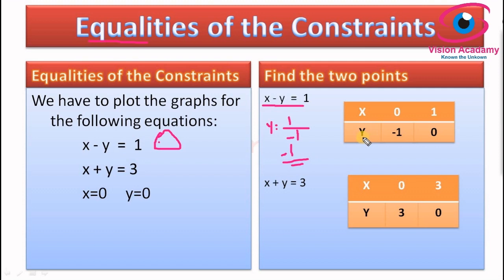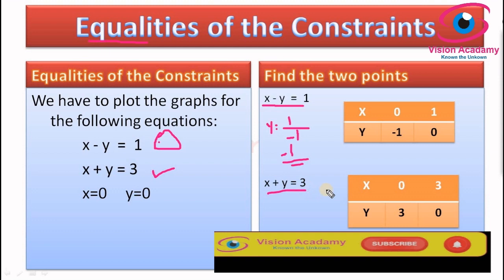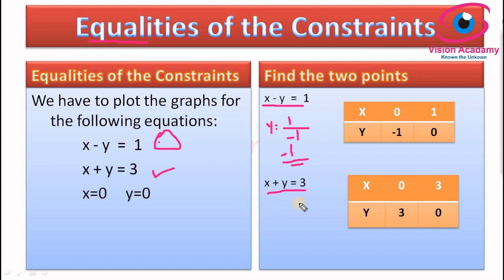Now I will consider the second constraint to find its two points. For x plus y equals 3: when x is equal to 0, y would be 3; when y is equal to 0, x would be 3 — since both coefficients are 1. So x equals 3 by 1, which is 3. This is how you find the two intercept points for each constraint after removing inequalities.